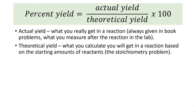Let's look at percent yield. The equation for percent yield is actual yield over theoretical yield times 100. The actual yield is what you really get in the reaction, or in a problem, it has to be given to you.